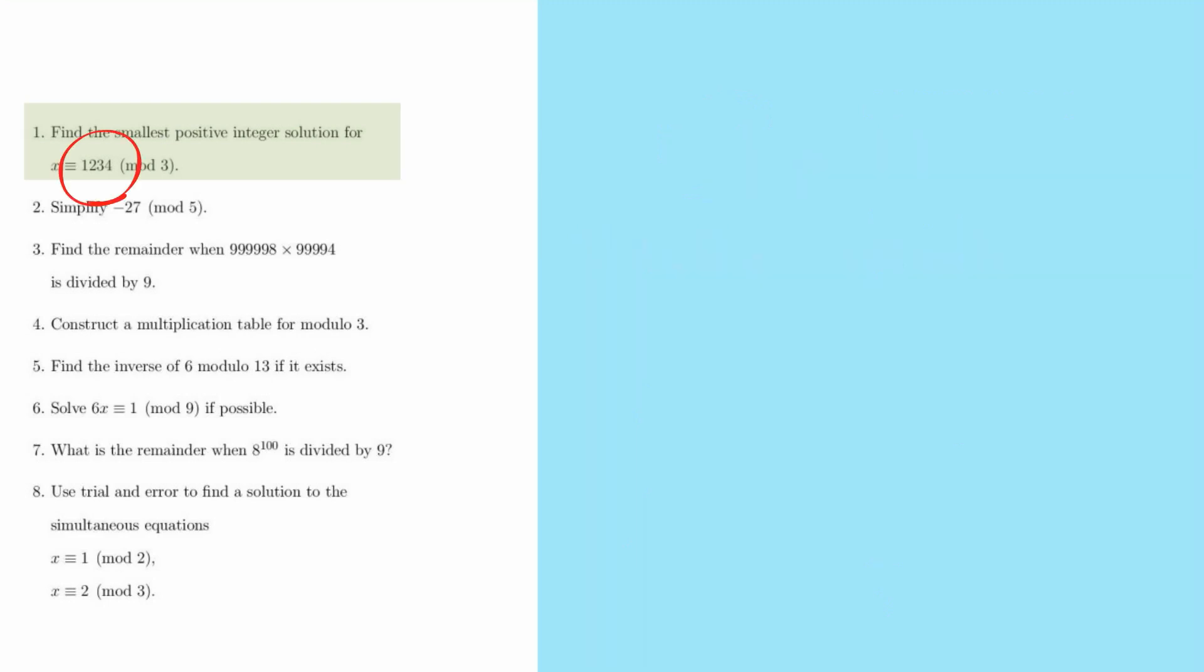Okay, so in question 1, if we follow what I've said so far, when we see 1234, we want to think what's the remainder when we divide by 3. And we know that, or we can work out, that 1234 is 411 times 3 plus 1. So the remainder is 1. So the answer is that x equals 1.